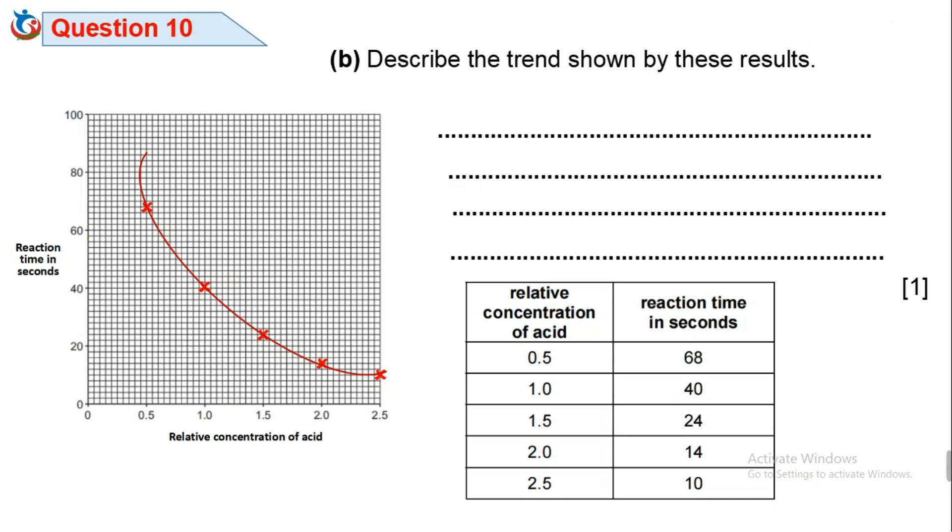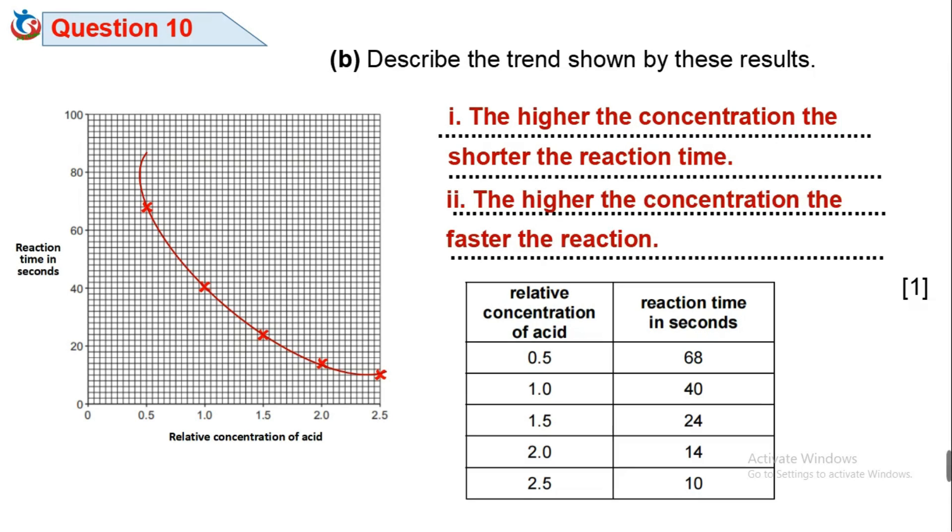Question 10B: Describe the trend shown by these results. From the table of results and the graph, we can observe that: 1. The higher the concentration, the shorter the reaction time. 2. The higher the concentration, the faster the reaction.